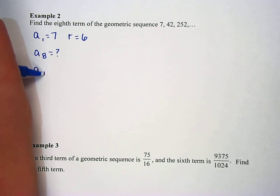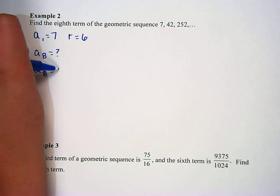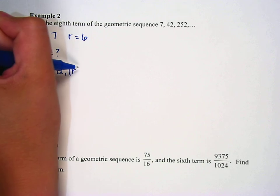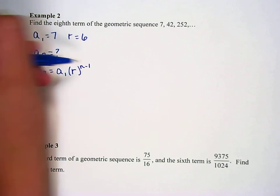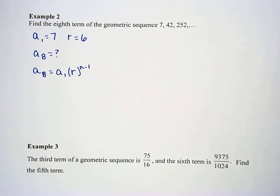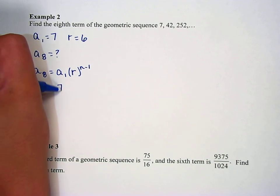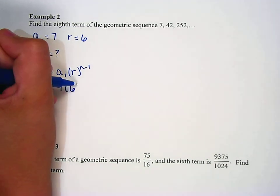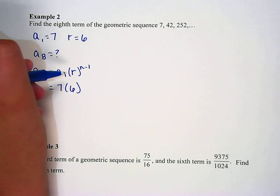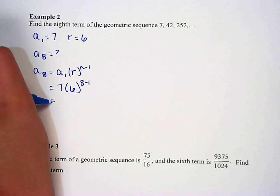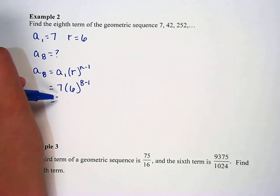So now to find a sub 8, we're going to write a sub 1. So a sub 8 equals a sub 8 equals a sub 1 times r to the n minus 1. And we know that since it's a sub 8, we can say equals right below it. So what's the first term? Seven. What's r? Six. What's n? Eight.